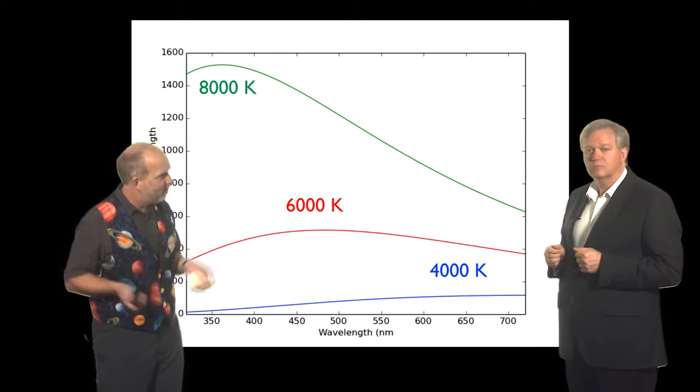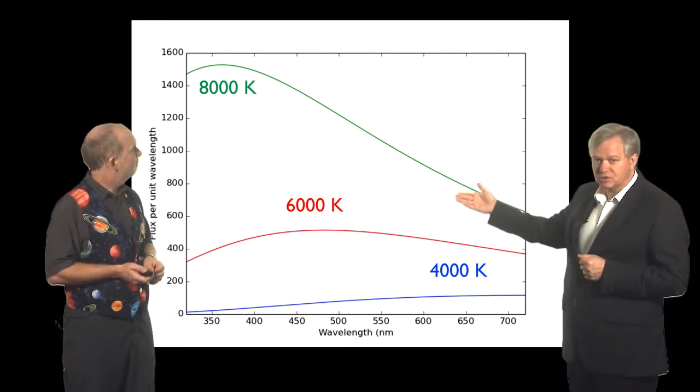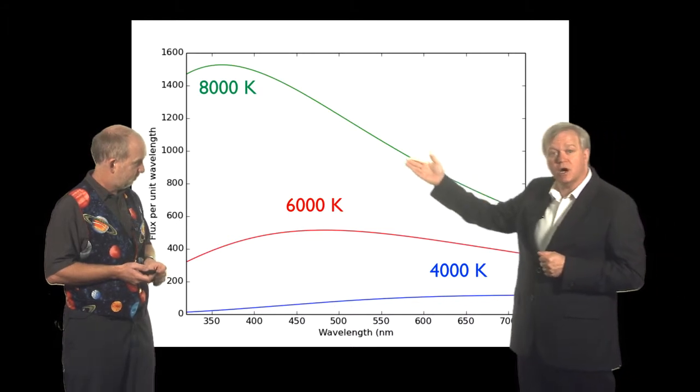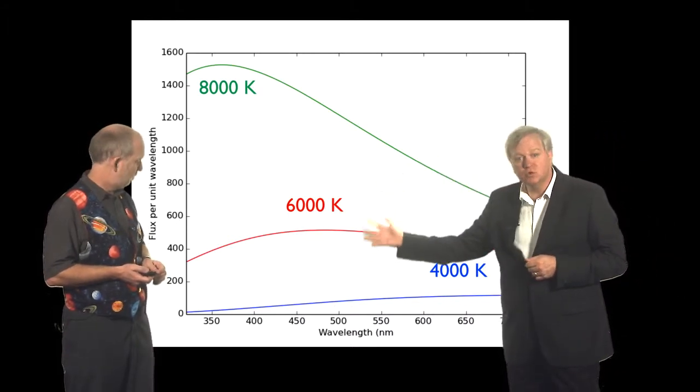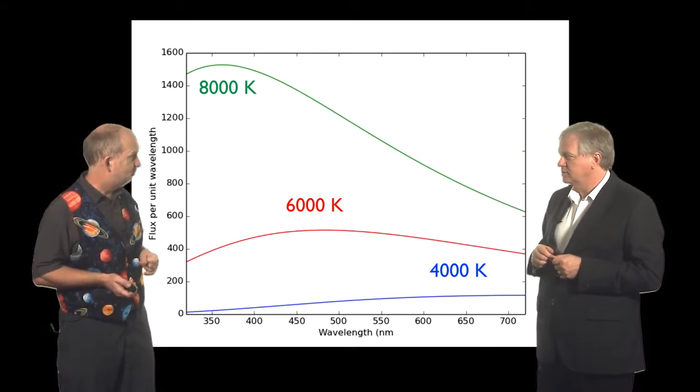And you can see that if you have something hot, so something for example substantially hotter than our sun, it's going to emit a lot of blue light or even ultraviolet light. Sun's peaking down around in the near ultraviolet about 350 nanometers. So that's so blue you can't even see the light with your eye.